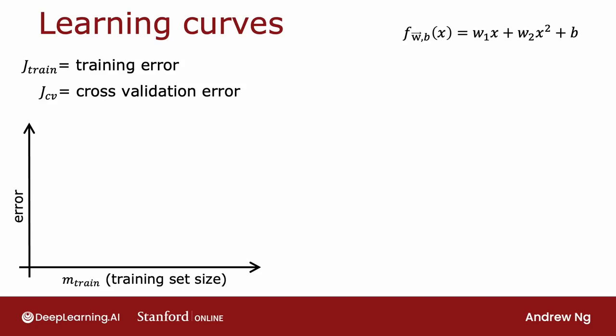Let's start by plotting the cross-validation error. It will look something like this — that's what JCV of W, B will look like. And it's maybe no surprise that as M-train, the training set size gets bigger, then you learn a better model, and so the cross-validation error goes down.